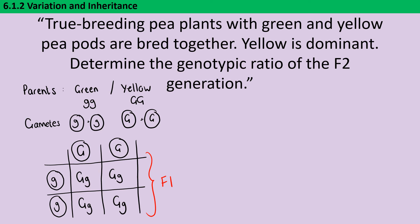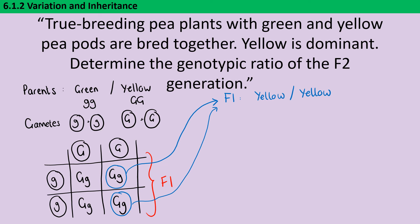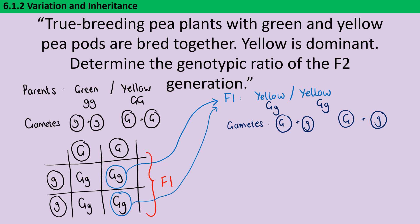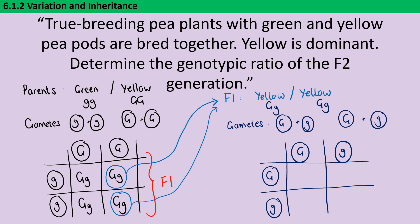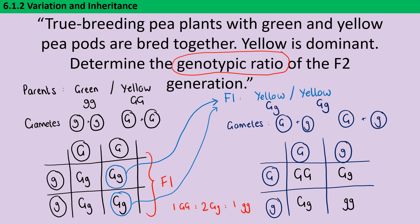That F1 generation is then used to produce the F2 generation — two individuals from F1 are bred together. The phenotypes of the F1 generation are yellow, because yellow is dominant to green, and their genotype is heterozygous (Gg). Each parent produces 50% of its gametes containing the dominant allele for yellow coloration and 50% with the recessive allele for green. A second Punnett square gives the following genotypes, and since the question asks for the genotypic ratio, that is one homozygous dominant to two heterozygous to one homozygous recessive.